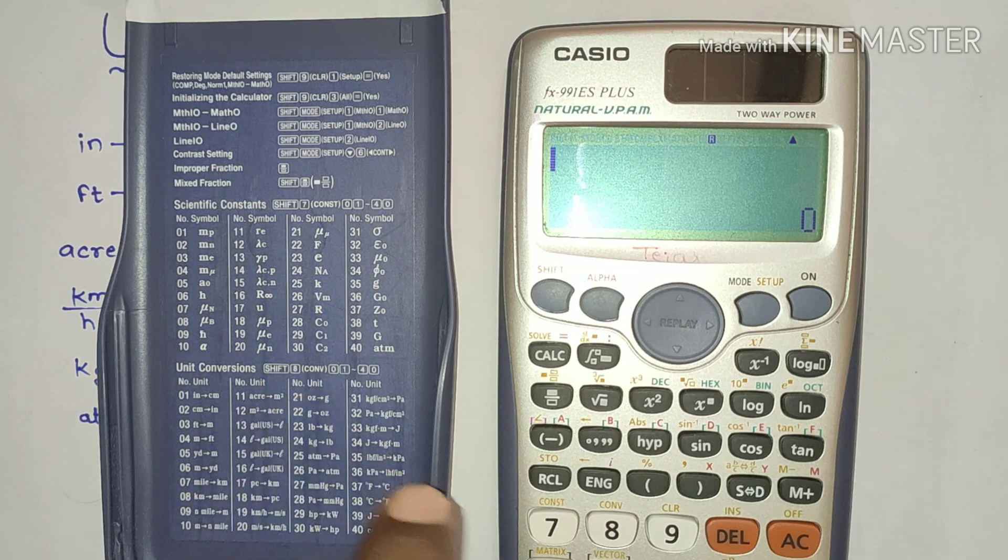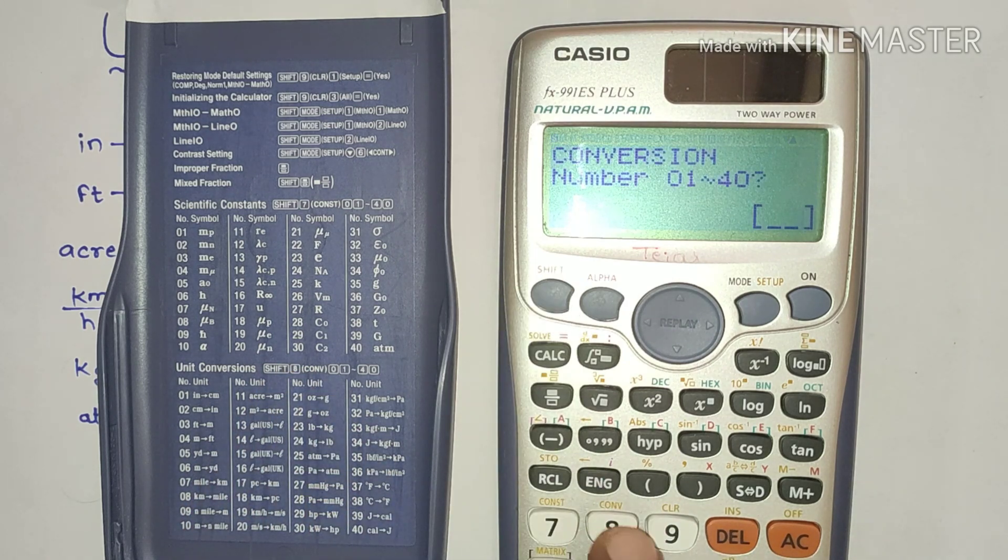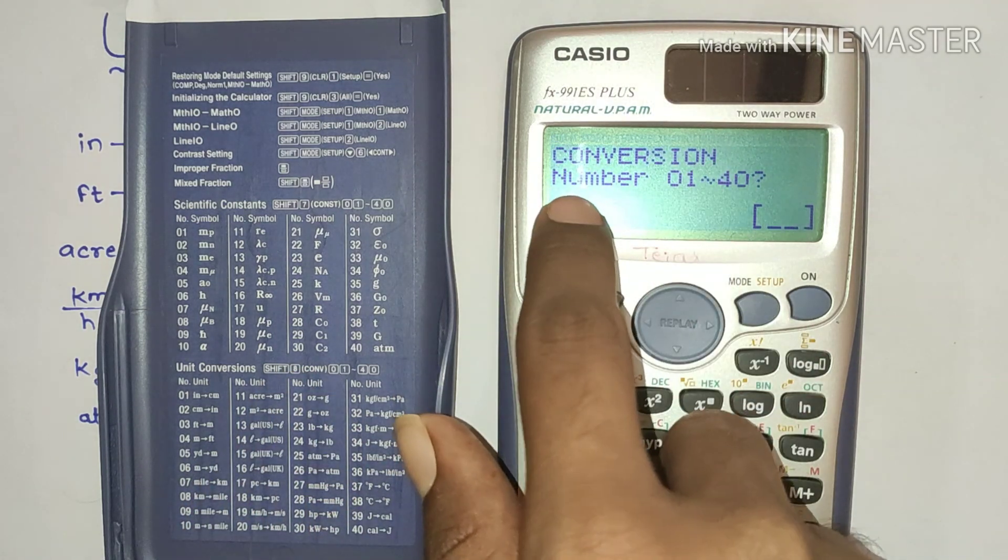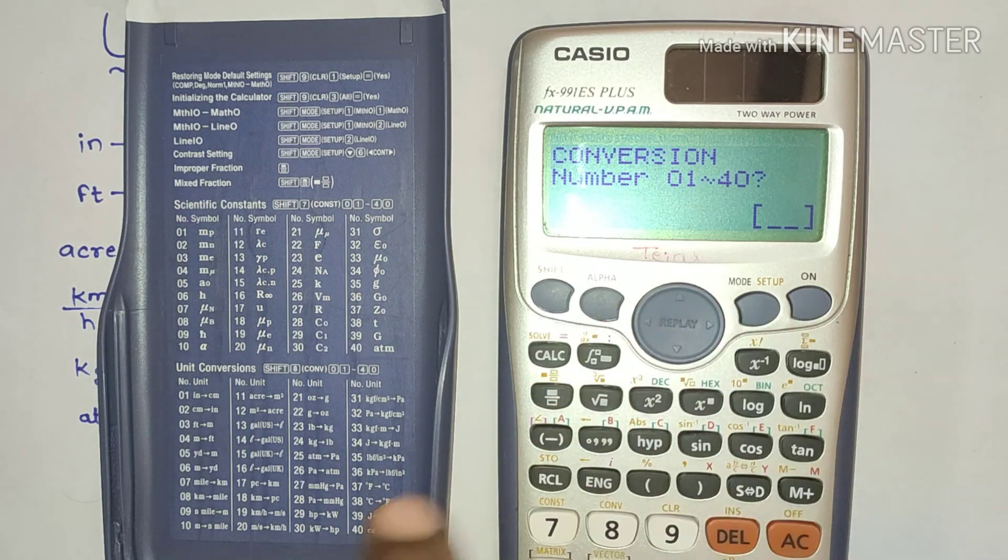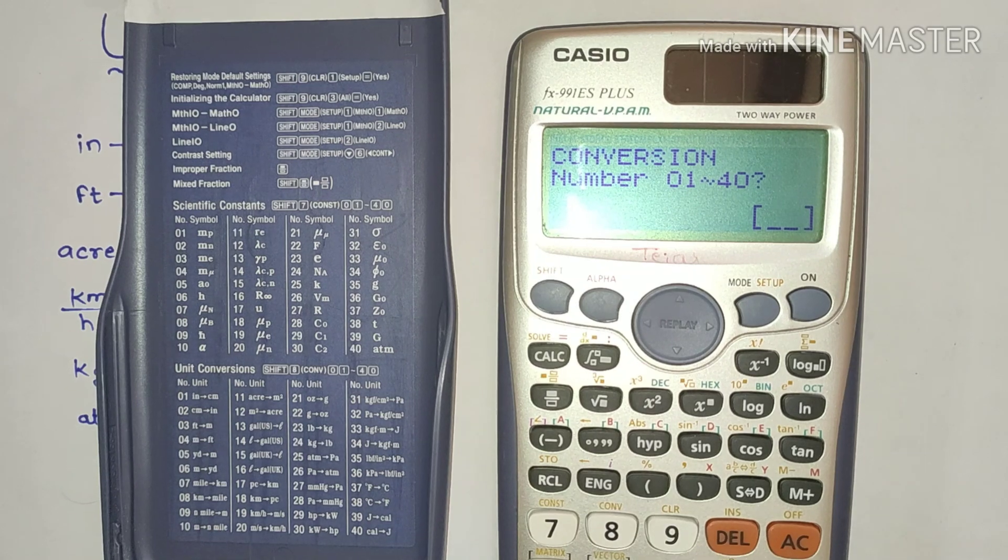Press shift and press 8. Now conversion number 1 to 40 will appear. These numbers are the numbers present in front of the unit conversion options.